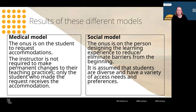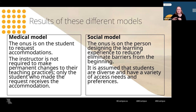With the social model, the responsibility shifts from the student to the person designing the learning experience to reduce or eliminate barriers from the beginning. Rather than assuming all students are the same, it's assumed that students are different and have a variety of access needs and preferences based on their bodies, minds, and context. The diversity of students is not something to be ignored or downplayed, but rather something to be designed for. There may still be cases where students need accommodations, but that information is then used to improve the learning design going forward. So while we're not specifically talking about disability today, the social model of disability is a helpful framework to keep in mind when talking about OER and UDL, as it encourages proactive design to support the diverse needs of students, including students with disabilities.